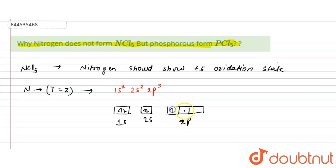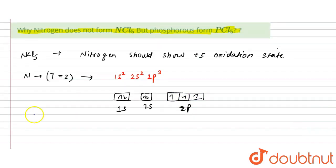Now you can see that nitrogen does not have vacant d-orbitals.